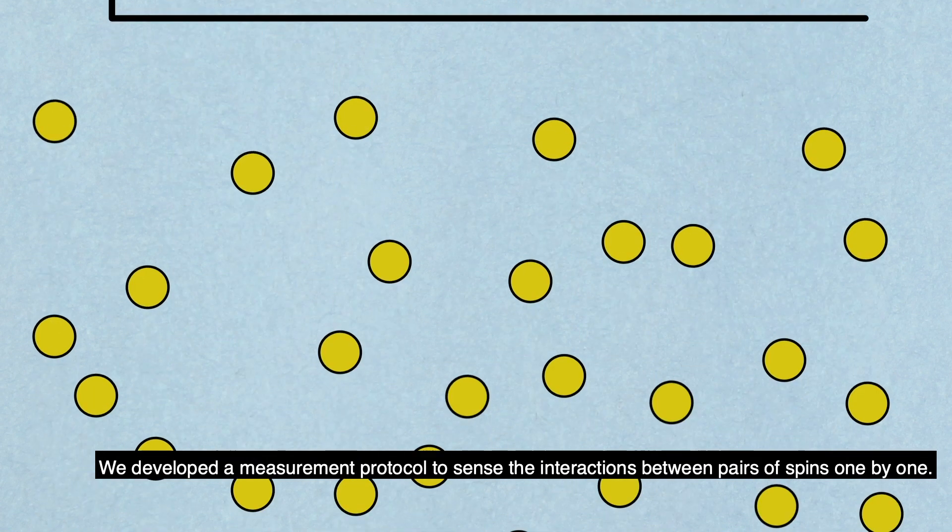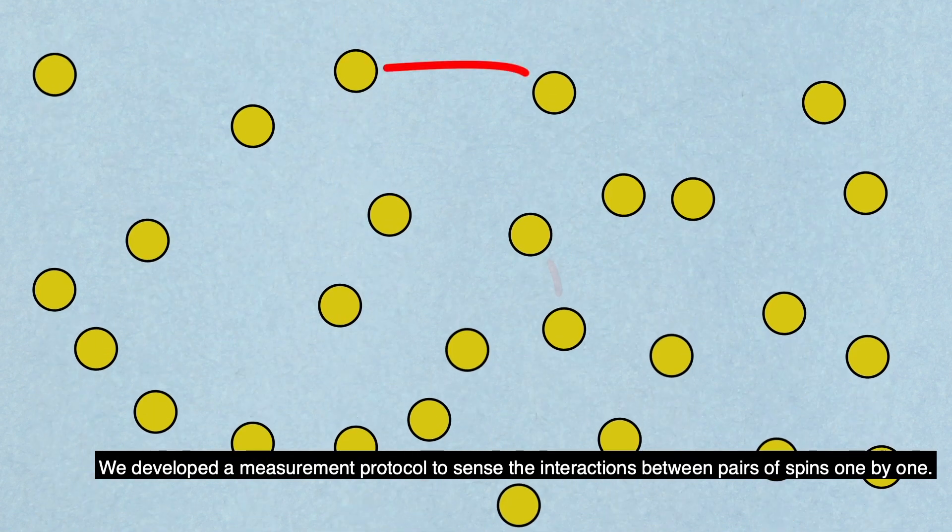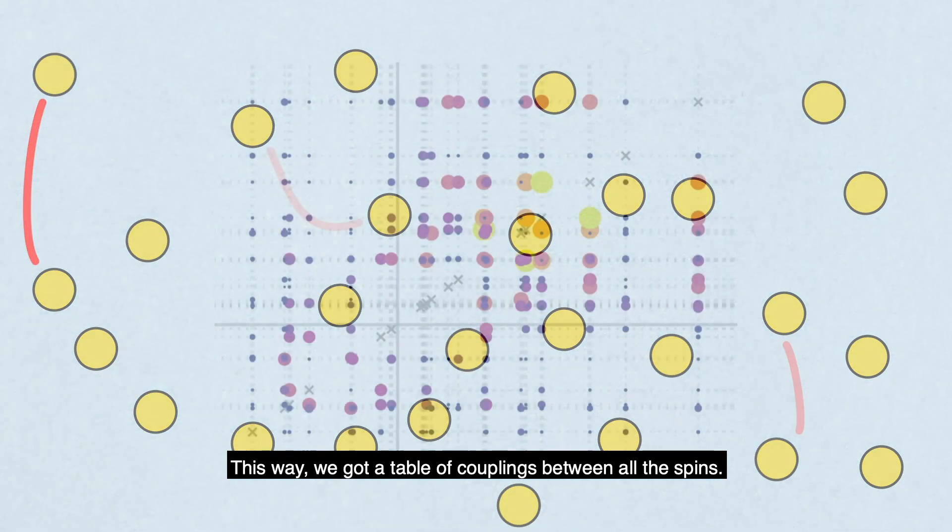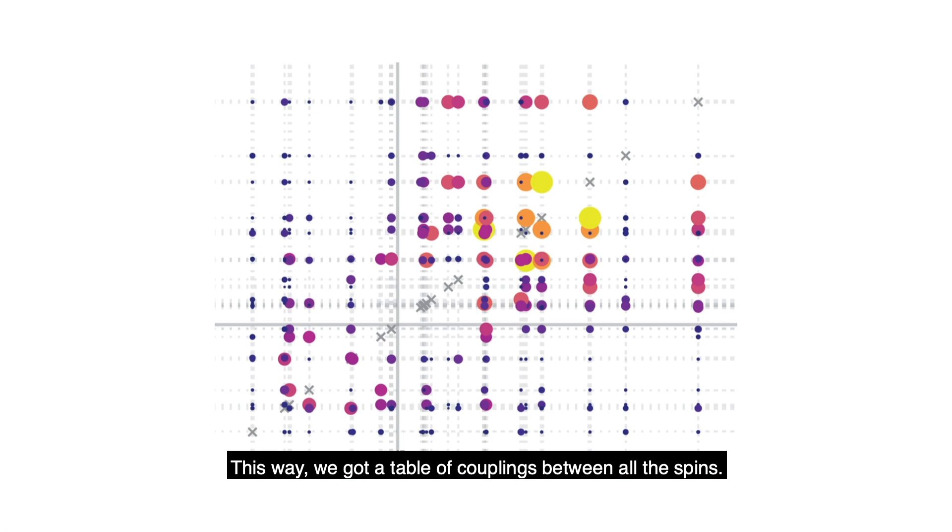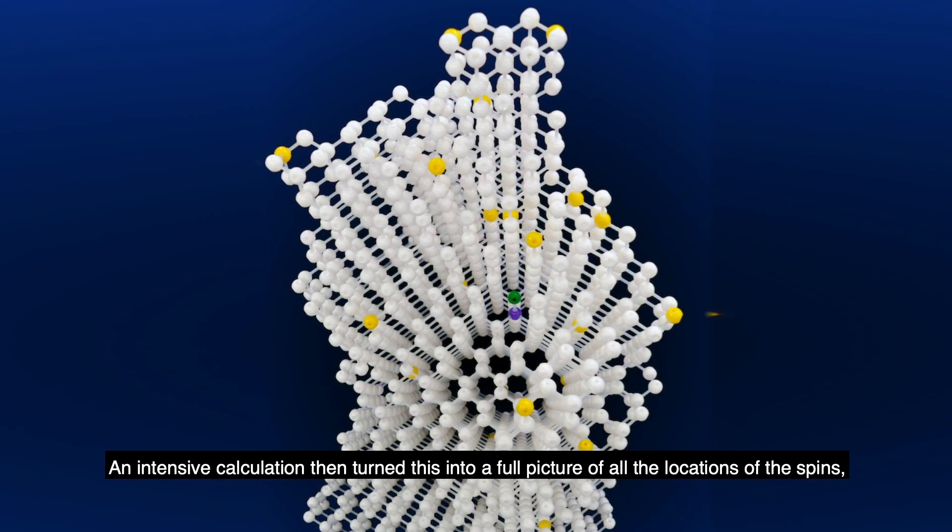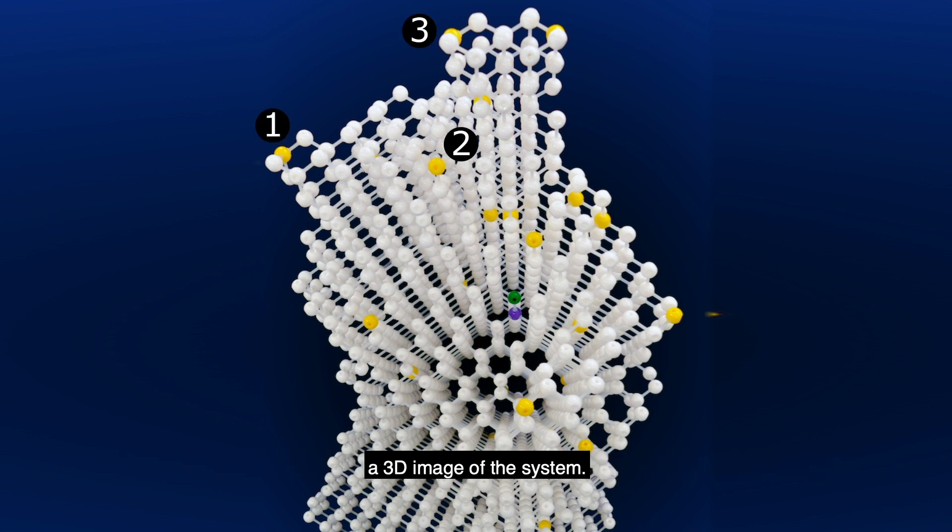We developed a measurement protocol to sense the interactions between pairs of spins one by one. This way, we got a table of couplings between all the spins. An intensive calculation then turned this into a full picture of all the locations of the spin, a 3D image of the system.